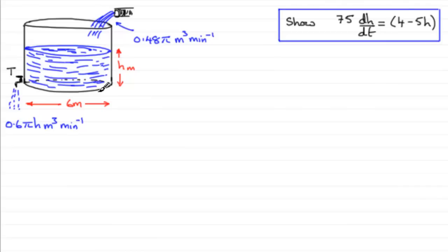And water is flowing into this tank at a constant rate of 0.48π cubic meters per minute. And at time t minutes, the depth of the water is h meters. And we've got a tap here at the bottom of the tank, and when the tap is open, water leaves at a rate of 0.6πh cubic meters per minute.